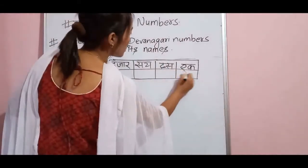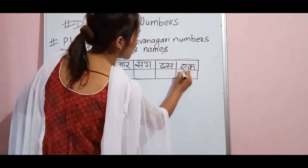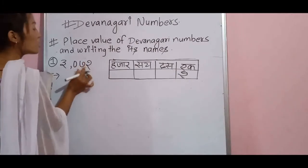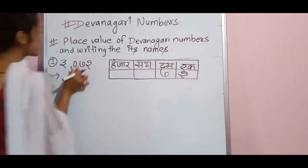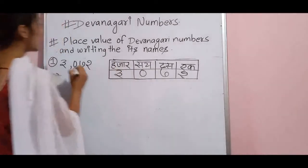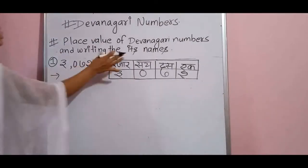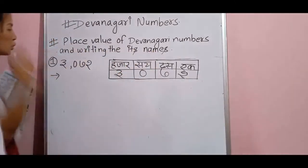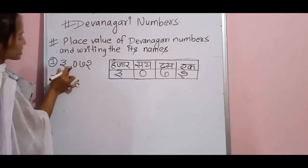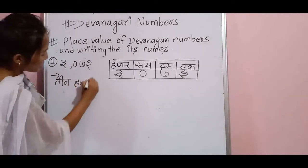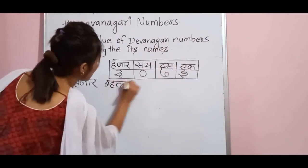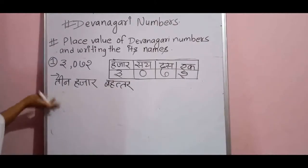So you have to write here: 2 in the ones place, after that there is 7 in the tens place, after that in hundreds there is 0, after that in thousands there is 3. Now you have to write its names also. 3 thousands — this is the way of writing its names.